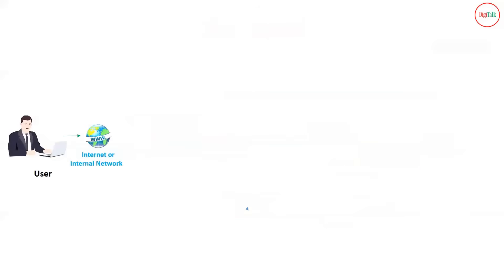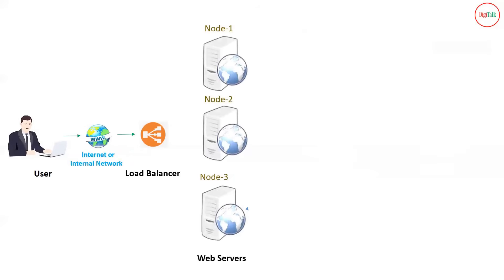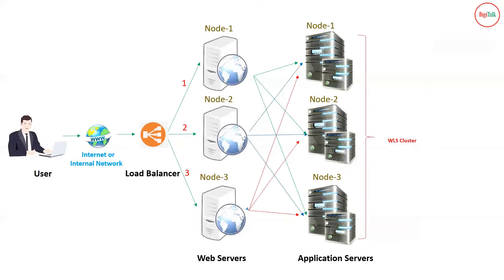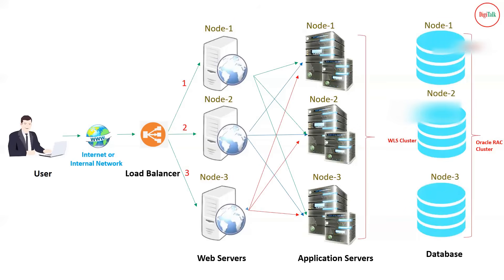A user can access the application via internet or internal network. In high availability configurations, you have a load balancer in between whose role is to distribute requests among different web servers. For example, with three web server nodes, the load balancer can balance the load by distributing requests between all three nodes in a round-robin fashion. Each web server contacts back-end application servers, and each application server can contact the database — which could be Oracle RAC (Real Application Cluster) — fetching data from any database node instance.